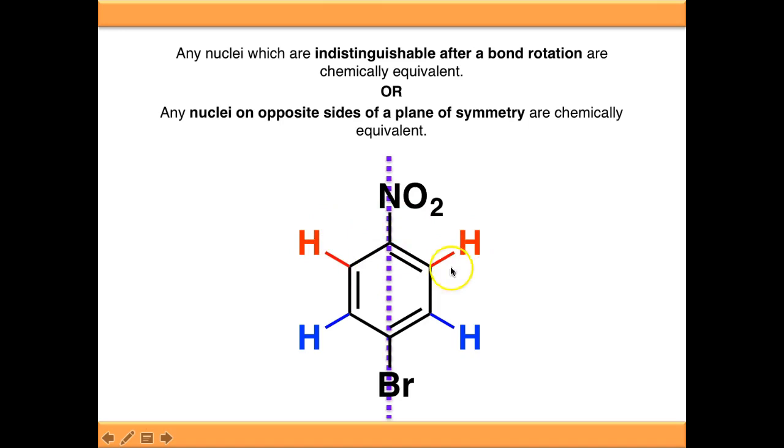But this hydrogen is also ortho to the nitro group but on the opposite side of the mirror plane. Therefore, these are in the same chemical environment, as are these down here.